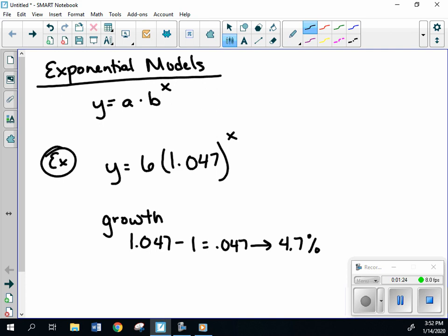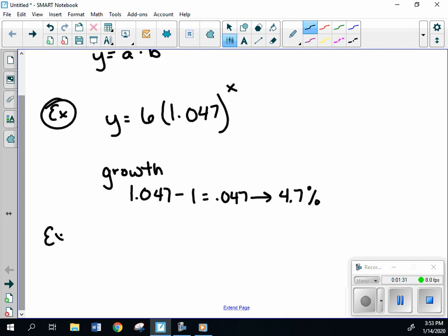Okay, so that's just telling us our rate. Same thing could be said if you had y equals, let's go with a half, 0.965 to the power of x. Now, looking at this situation, we are less than 100%, which means that we're going to have an exponential decay.